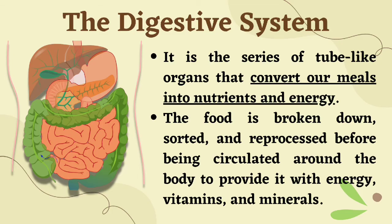The food is broken down, sorted, and processed before being circulated around the body to provide it with energy, vitamins, and minerals. The digestive system converts the food we eat into nutrients and energy before it is circulated to the different parts of the body. That is the main function of our digestive system.